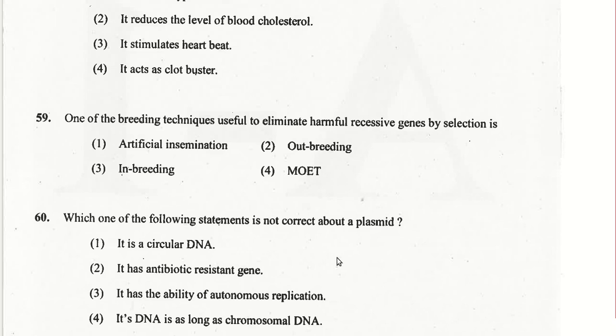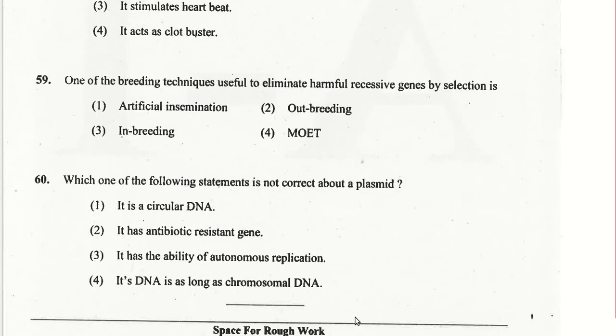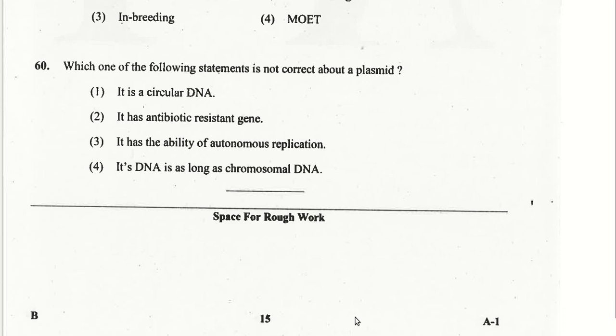Question 60 asks which statement about a plasmid is not correct: it is circular DNA — correct; it has antibiotic resistant genes — correct; it has the ability of autonomous replication — correct; its DNA is as long as chromosomal DNA — this is wrong. The fourth option is the wrong statement. That completes the discussion of the Biology 2016 Karnataka CET paper. Share, like, and subscribe for more such videos. Best wishes for your upcoming CET examinations.